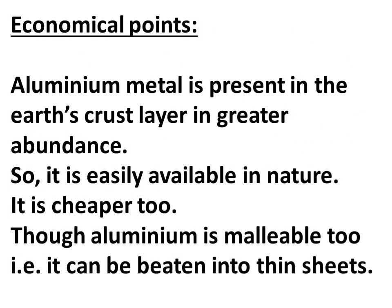From an economical perspective, aluminium is present in the Earth's crust in greater abundance, so it is easily available in nature. It is cheaper as well. Aluminium is also malleable - meaning it can be beaten into thin sheets. These are the reasons why aluminium is used for making foils.